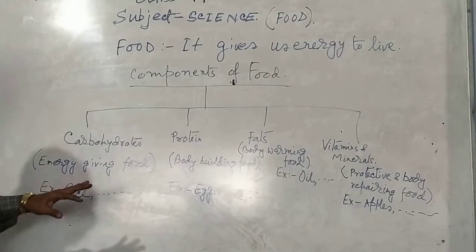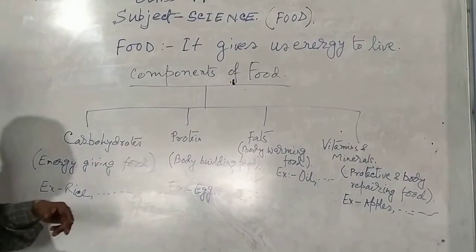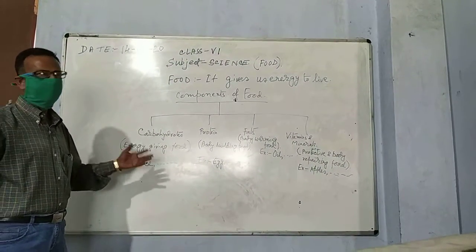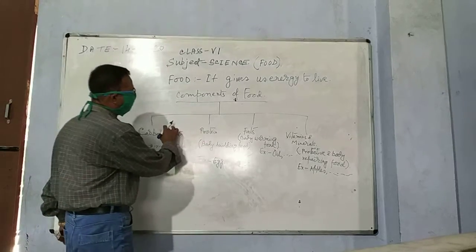Besides that, a food should be compiled with two or three types of components. They are called nutrients of the food. Nutrients of the food, when it is compiled.